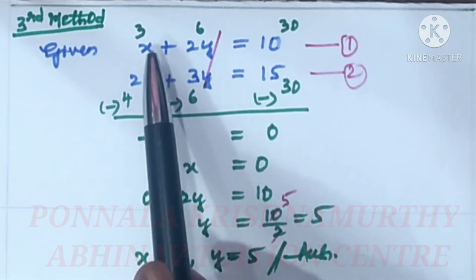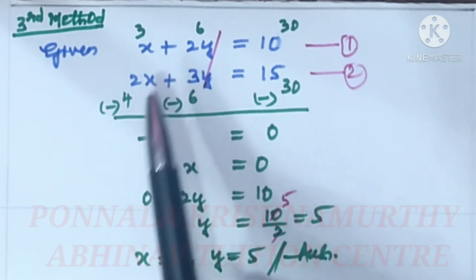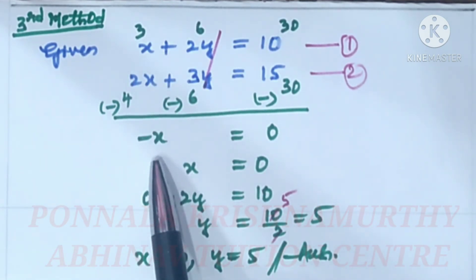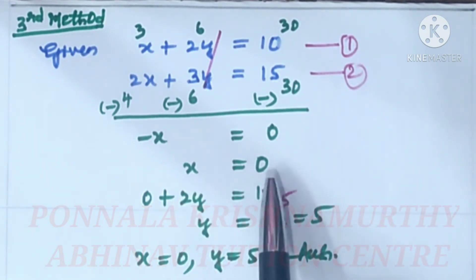x is nothing but 3x here. Now 3x minus 4x is minus x plus 30 minus 30 is 0. That is, x is equal to 0.